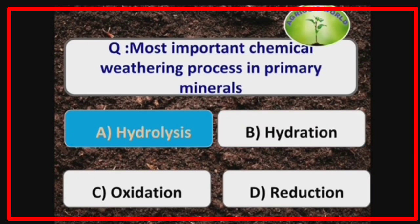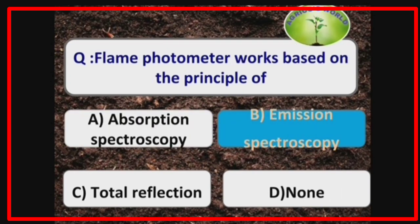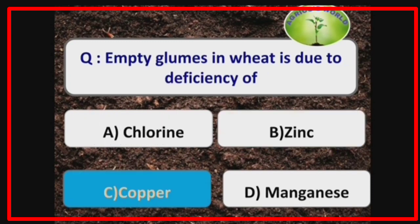The most important chemical weathering process in primary minerals is hydrolysis. A flame photometer works based on the principle of emission spectroscopy. Empty glumes in wheat are due to the deficiency of copper.